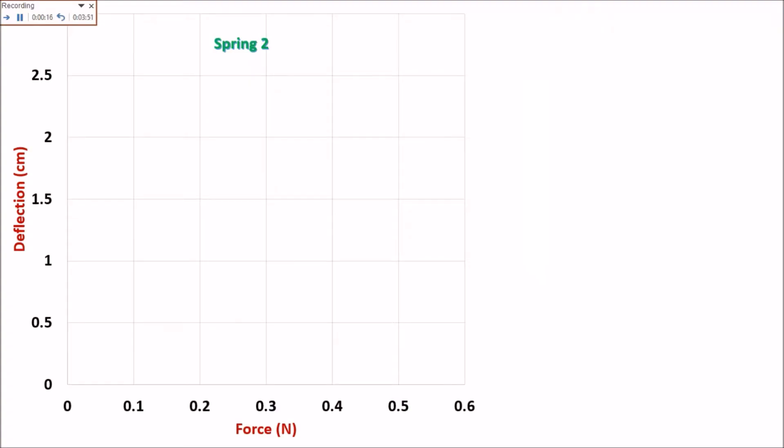So this one is Spring No. 2. To get the spring constant of Spring No. 2, we will graph the data we get from the previous experiment. So we will put the deflection in y-axis and the force in Newton in the x-axis.